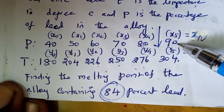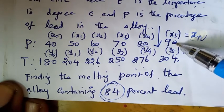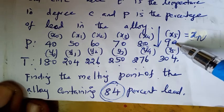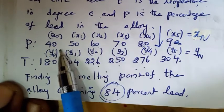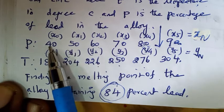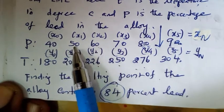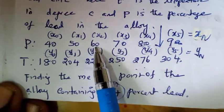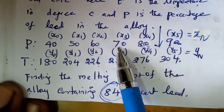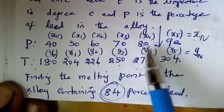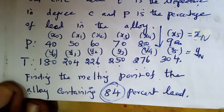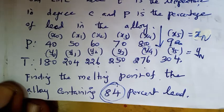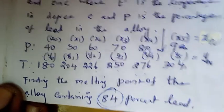Since 84 lies between 80 and 90, we have to apply Newton's backward interpolation formula. At the same time, we have to check that the class intervals are equal: 50−40=10, 60−50=10, 70−60=10, 80−70=10, 90−80=10. So the class interval is equal with h=10.